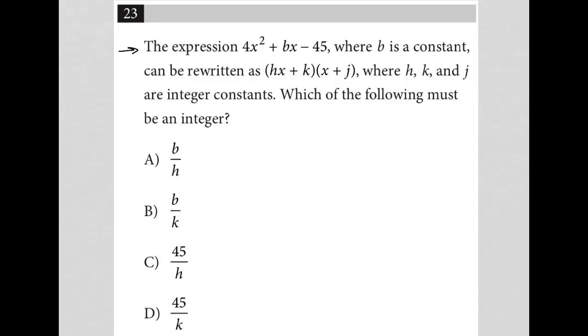The expression 4x² + bx - 45, where b is a constant, can be rewritten as (hx + k)(x + j), where h, k, and j are integer constants. Which of the following must be an integer?